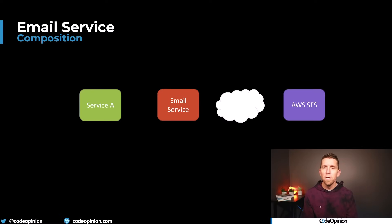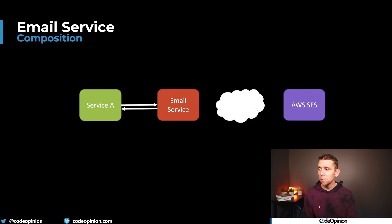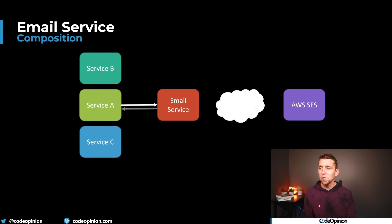In reality, regardless of whether you're consuming an event, a command, or directly calling the service — when you say 'send out this shipping email,' that email service needs to fetch information from one service, probably another service, maybe another service, to do all that composition so that it can actually send out that email.